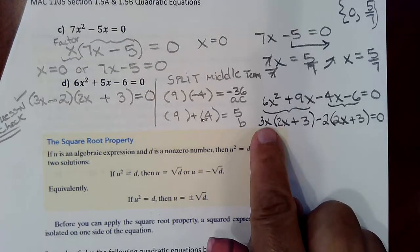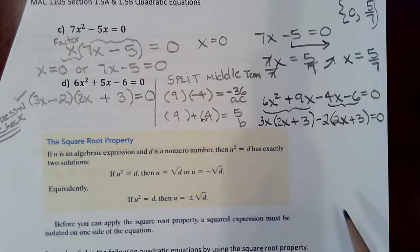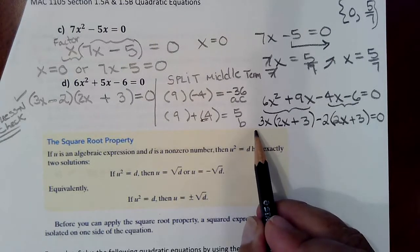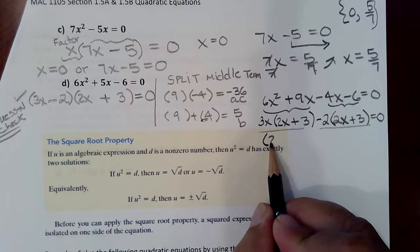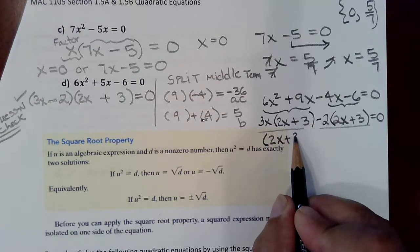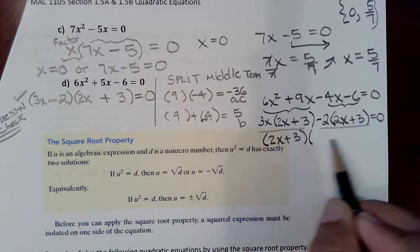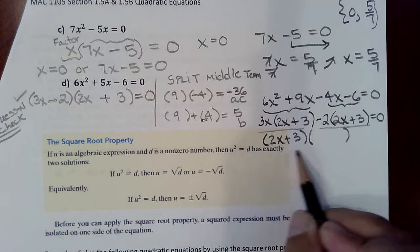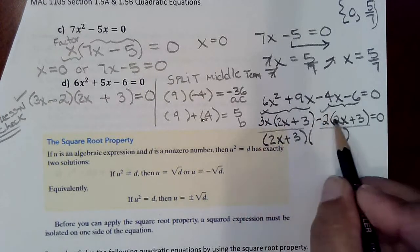So I've taken a GCF out of the front two terms. I've taken a GCF out of the back two terms. And now one more time, take a GCF out. What this term has in common with this term is 2x plus 3. And then what goes in the second parenthesis to complete that factoring would be the GCFs that you pulled out, 3x and negative 2.